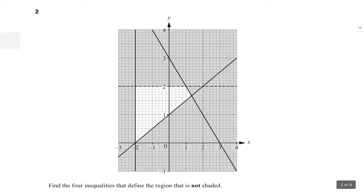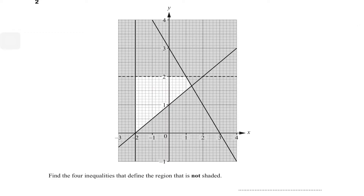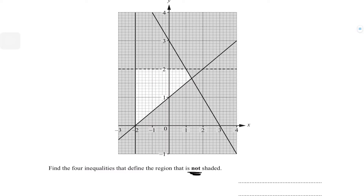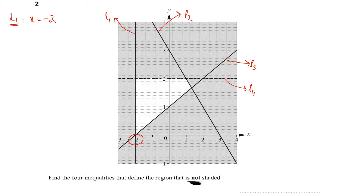Question two is slightly different — we're given the lines and must find their equations, then define the unshaded region. Before starting, number your lines. Line one is a vertical line cutting the x-axis at −2, so its equation is x = −2. For line two, we find the gradient using points (0, 3) and (3, 0): gradient = (3−0)/(0−3) = −1. The y-intercept is 3, giving y = −x + 3.